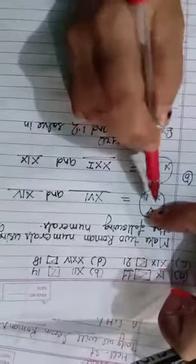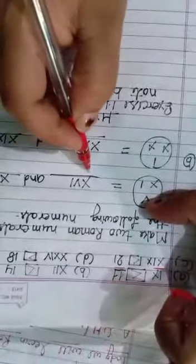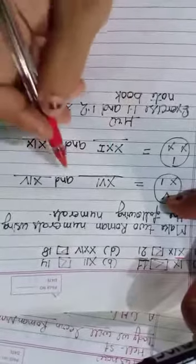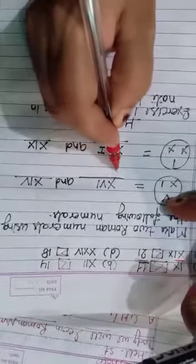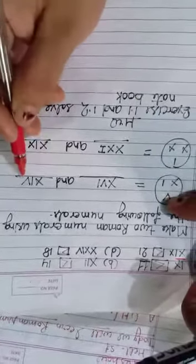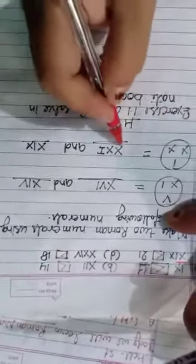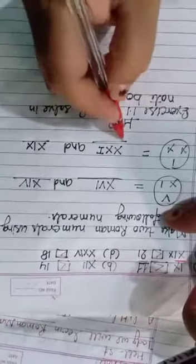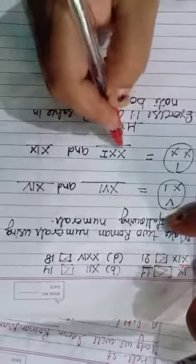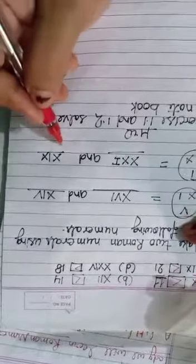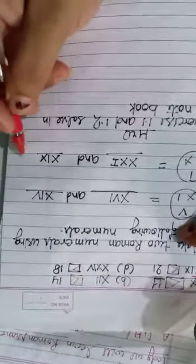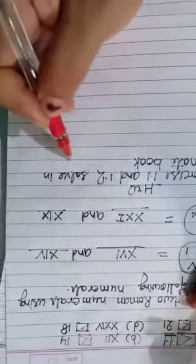Question 4: Make two Roman numerals using the following numerals. First Roman numeral is XVI, which means 10 plus 6 equals 16. Next: XIV means 10 plus 4 equals 14. Next: XXI means 10 plus 10 plus 1 equals 21. Next: XIX means 10 plus 9 equals 19. This exercise covers 1.1 and 1.2 — solve in your notebook.